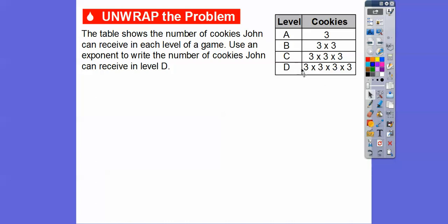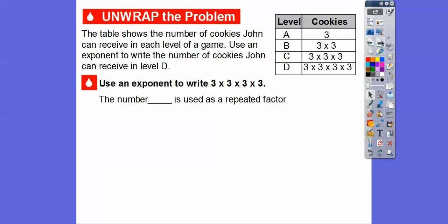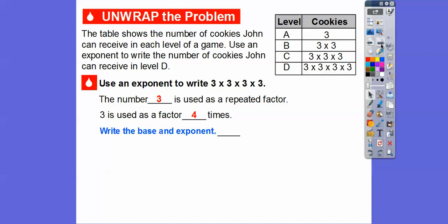So we have 3 times 3 times 3 times 3. We're going to write this as an exponent. The number 3 is the repeated factor, and 3 is used as a factor 1, 2, 3, 4 times — there are four 3s. So we write the base and the exponent: it is 3 to the fourth.